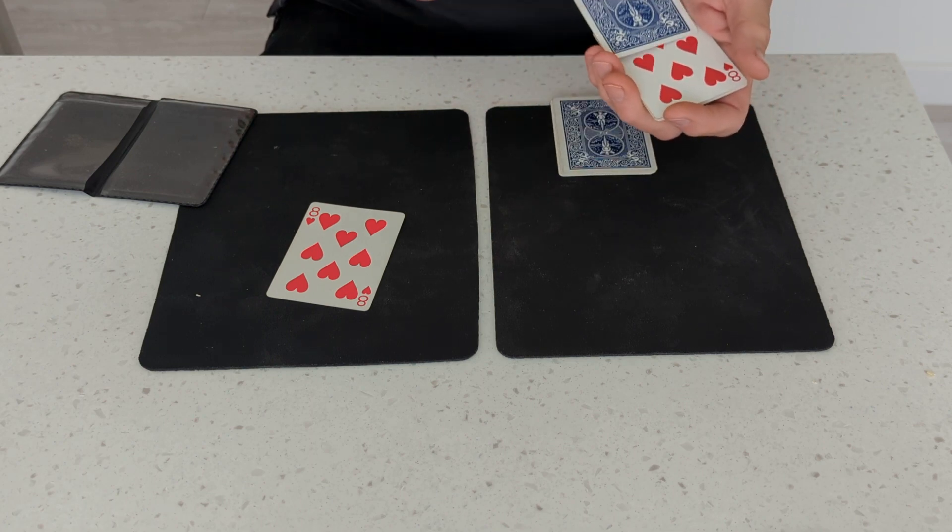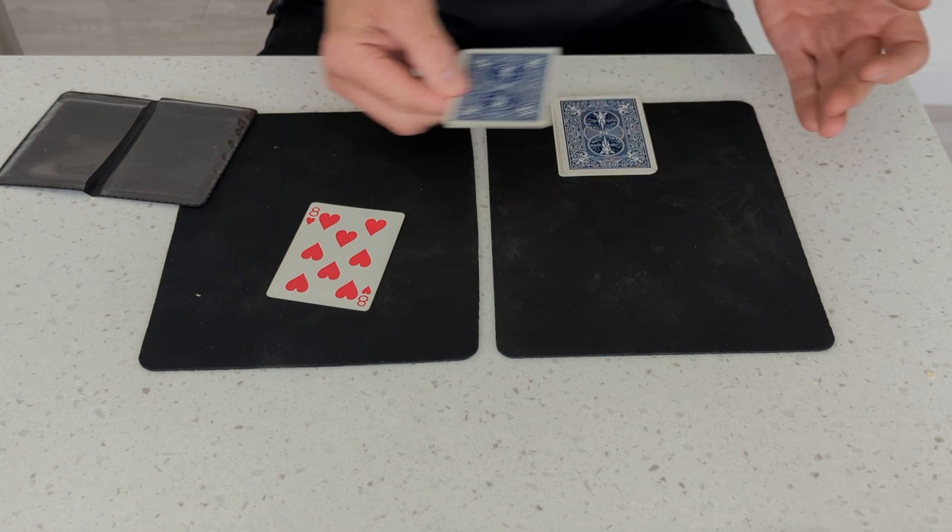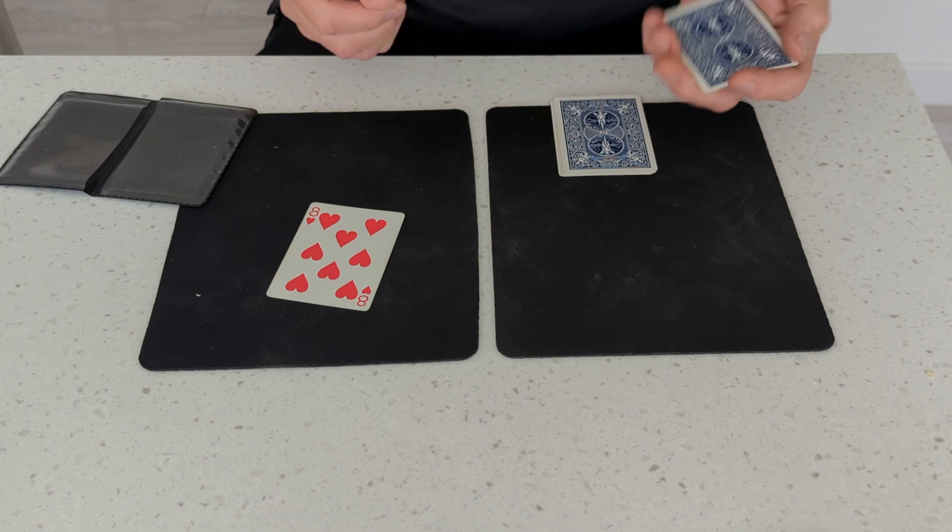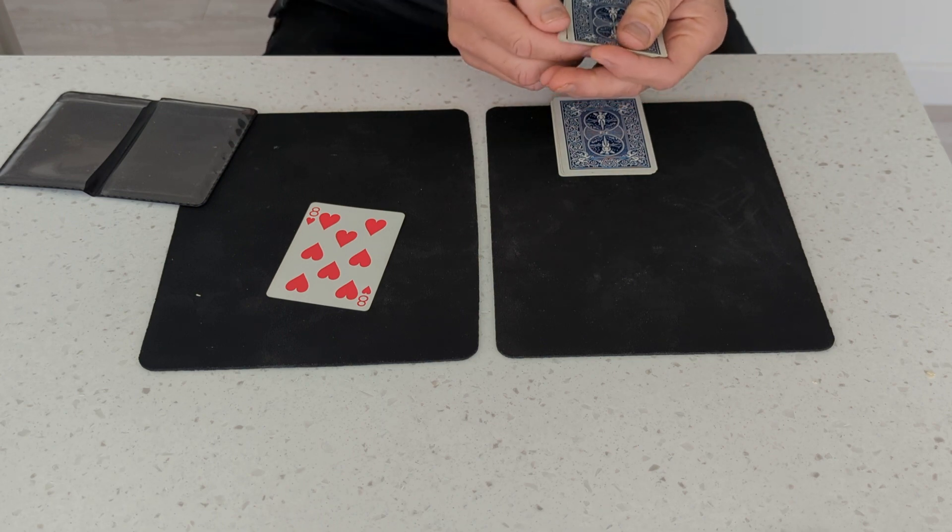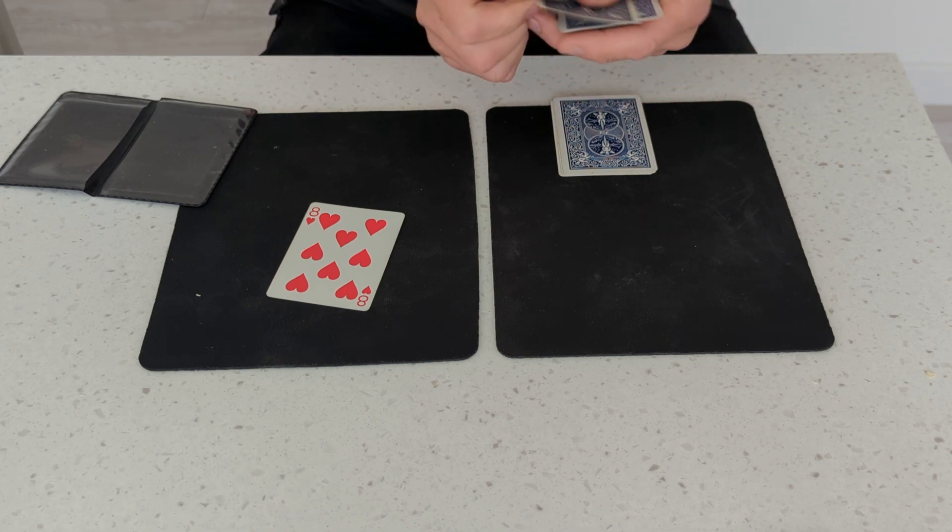I'll take one face down eight and place it in with them. Now watch, if you just wave over the face down cards, that one turns face down. And if you wave over all the face down cards, they are indeed all face down cards.